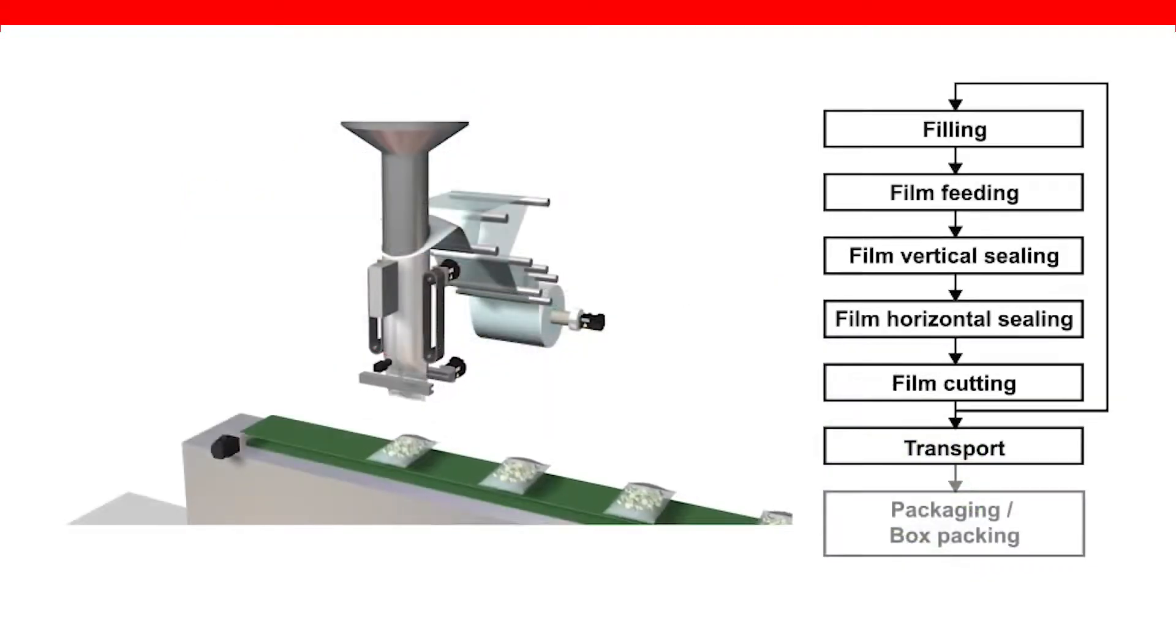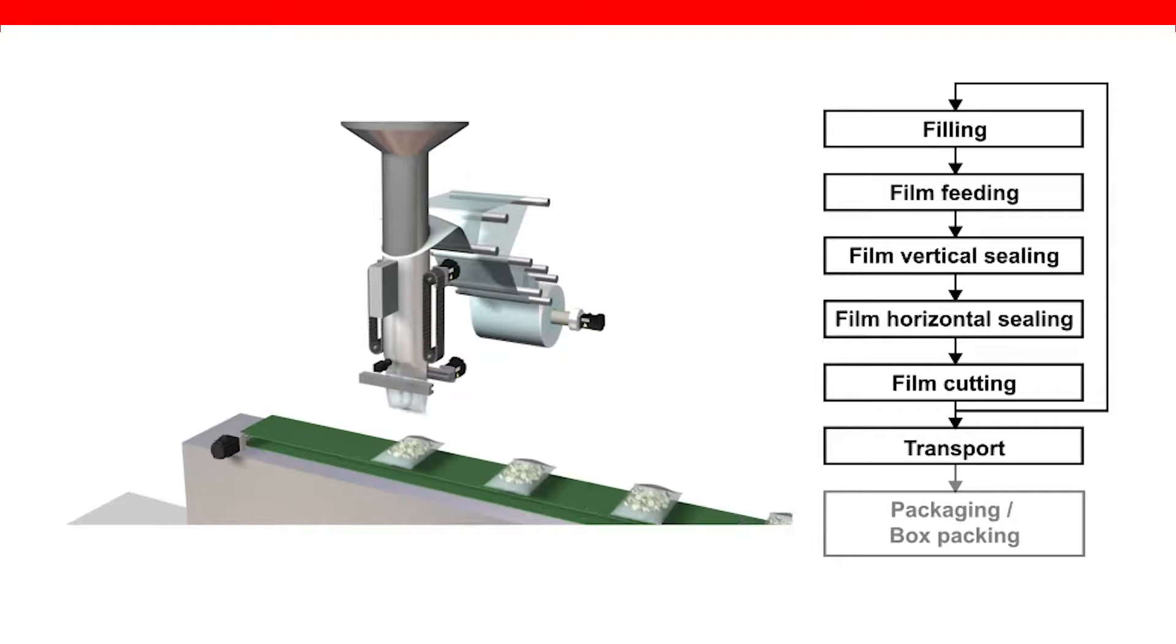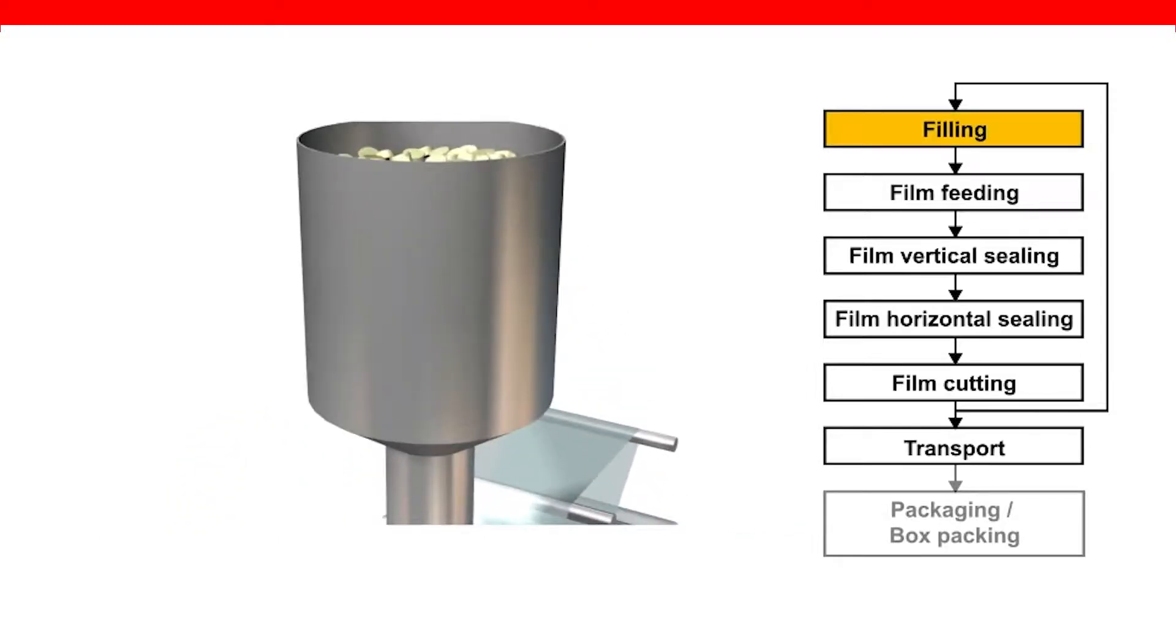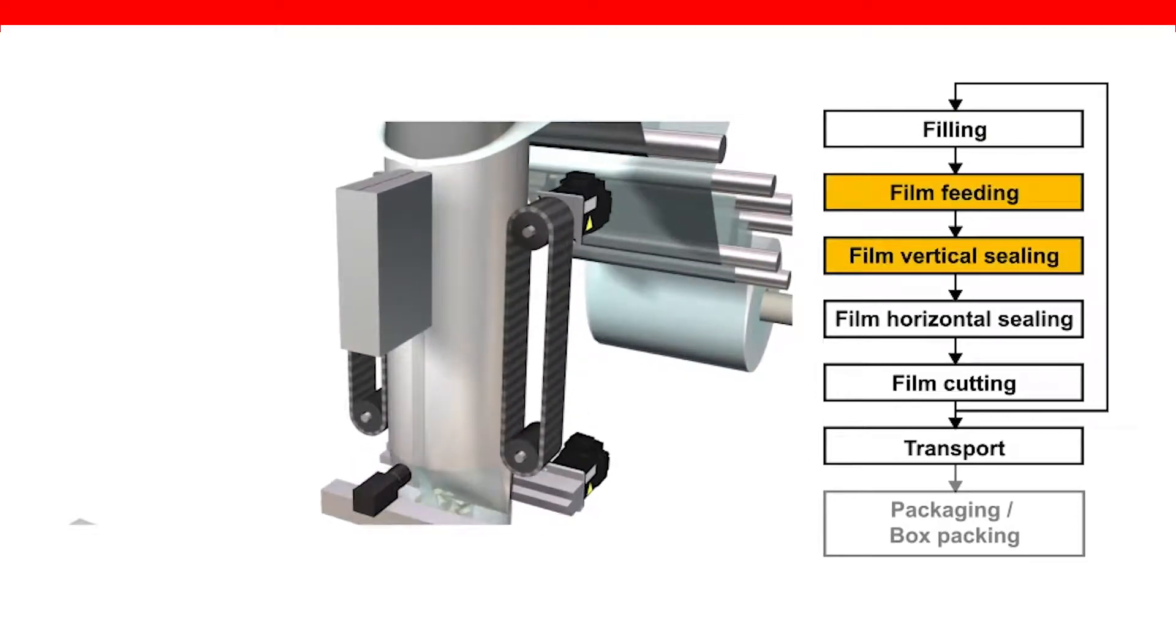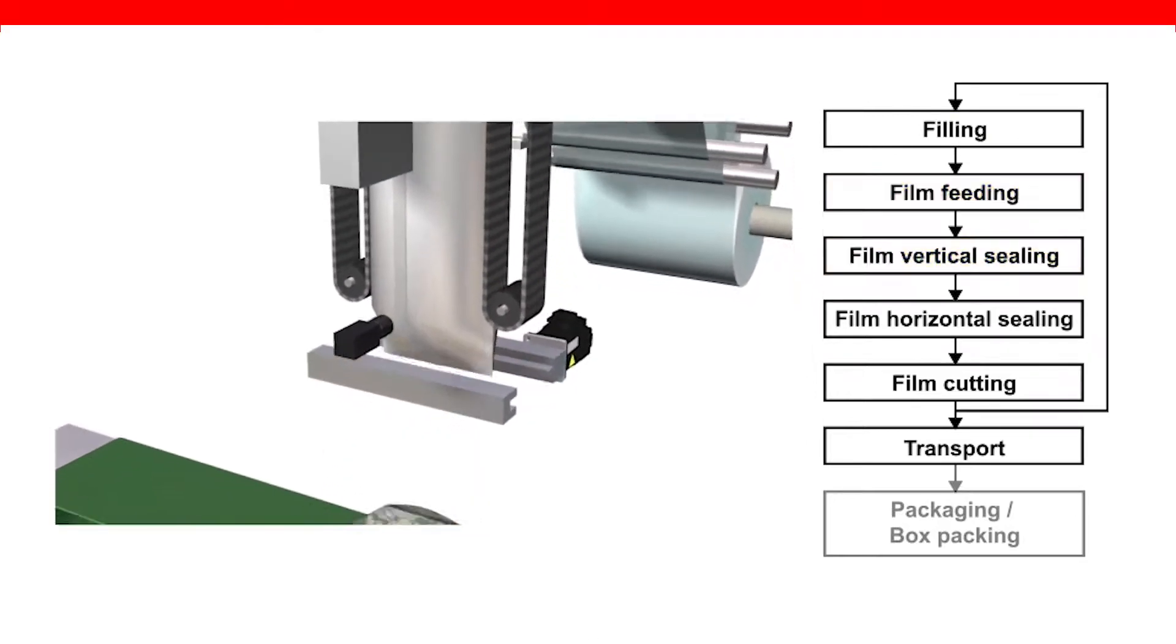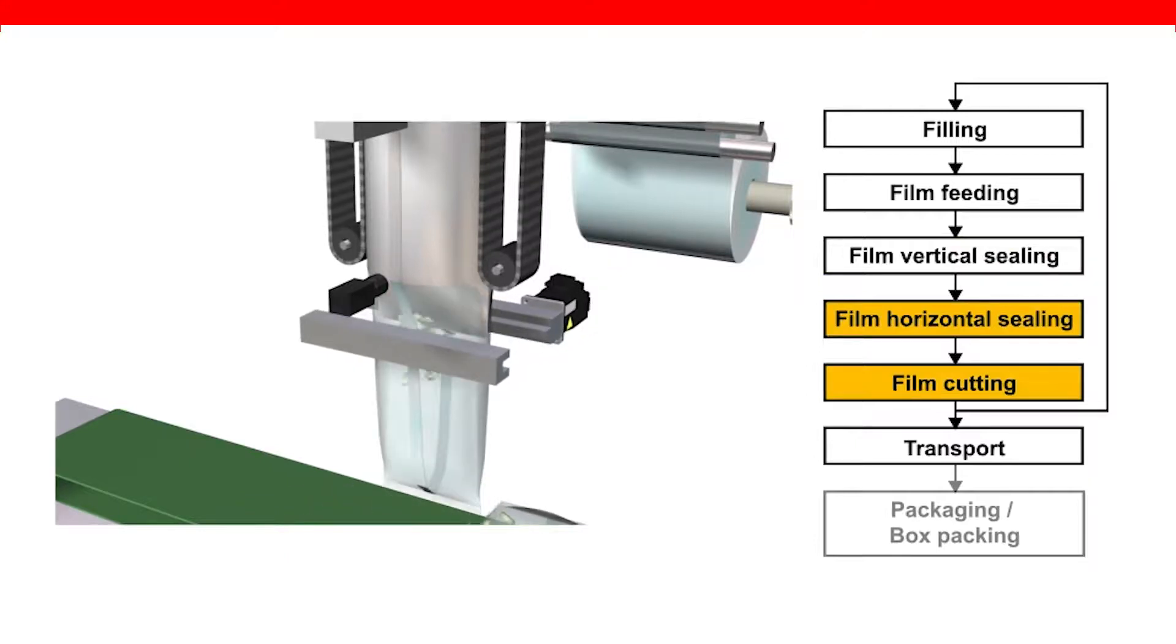As we move on to vertical form-fill seal, with this being a form-fill seal machine, there are some similarities to the horizontal form-fill seal. They both provide a vertical and horizontal seal and create an individual package. The major difference, other than orientation, is the product going into the package. A system such as this primarily deals with a product that is variable-size particulate that can easily be managed through a feeder bin or hopper.